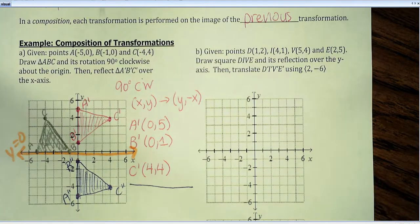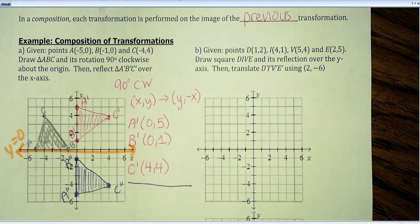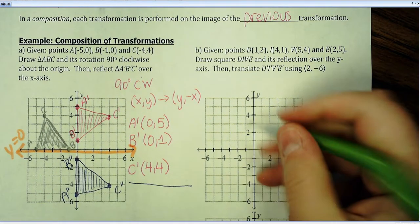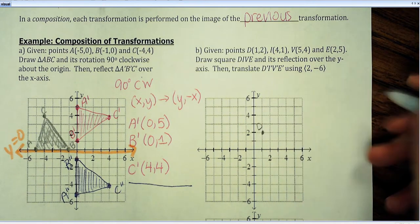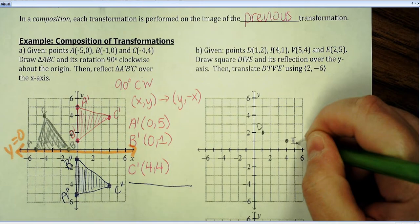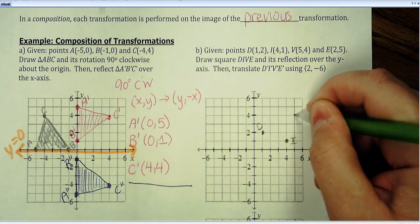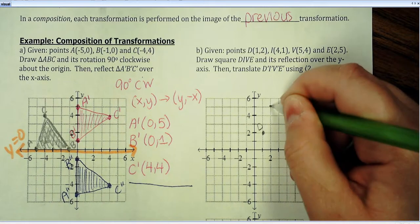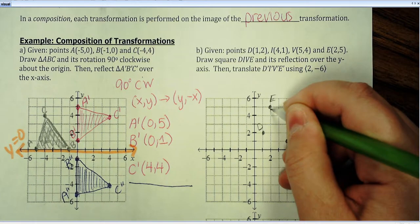Okay, I'm going to do one more, and then you guys can try the rest on your homework assignment. So, just going to go ahead and plot the original. So, one, two is D, four, one is I, five, four is V, and two, five is E, and this is going to make a square.